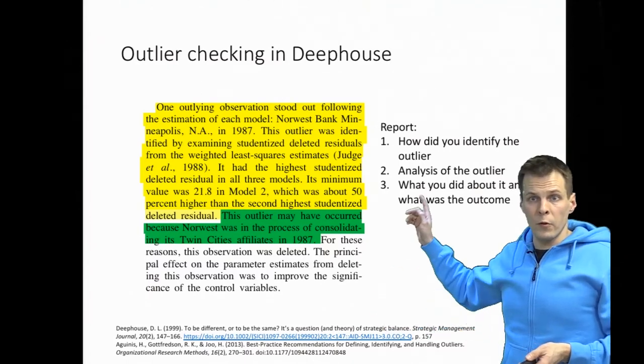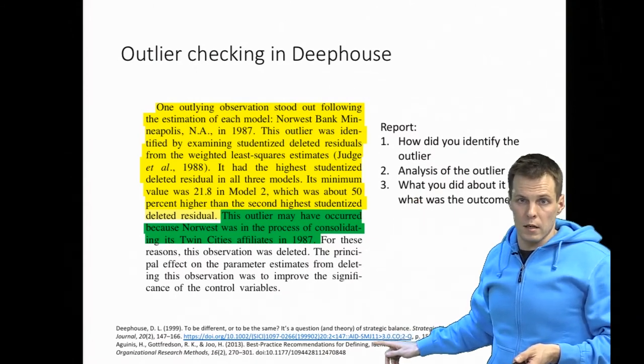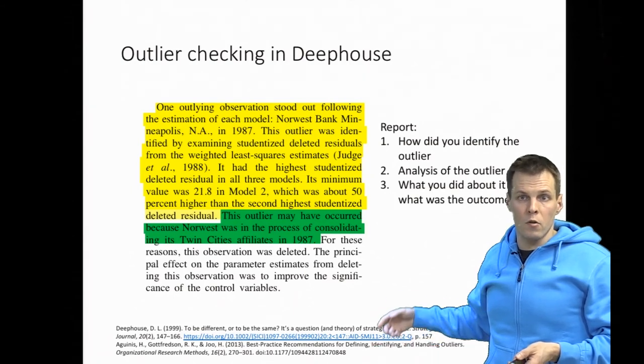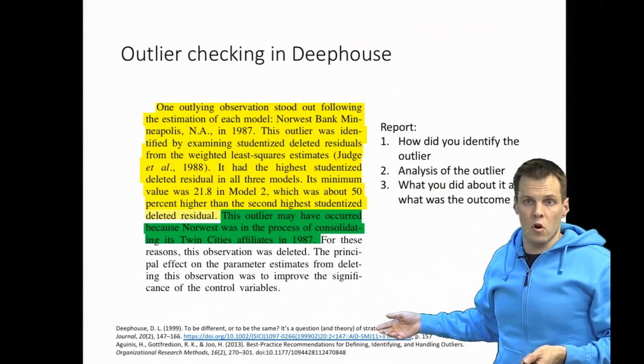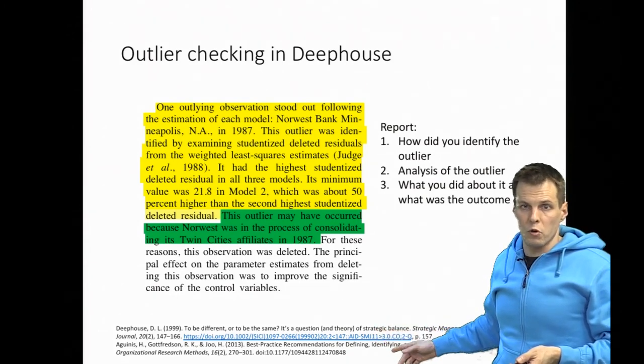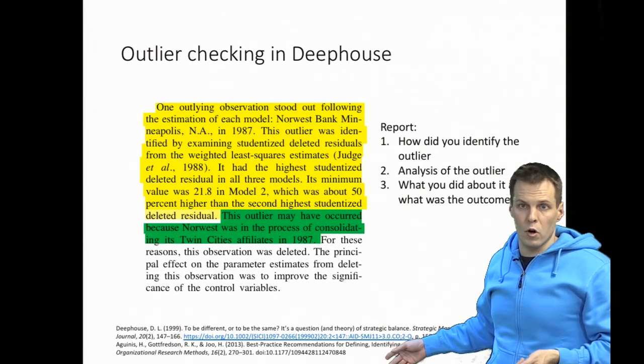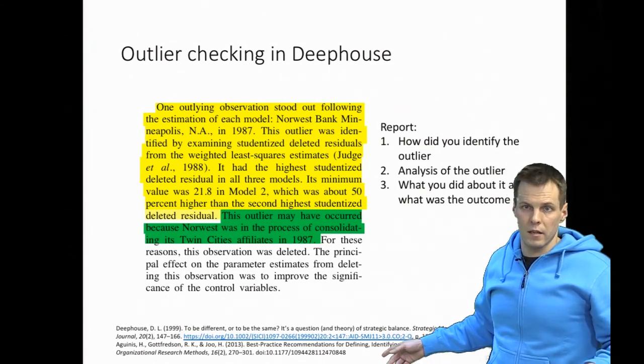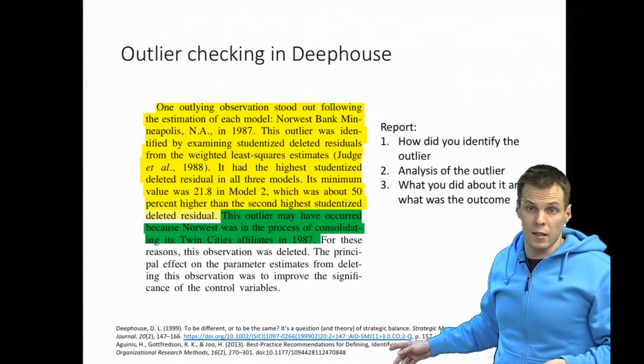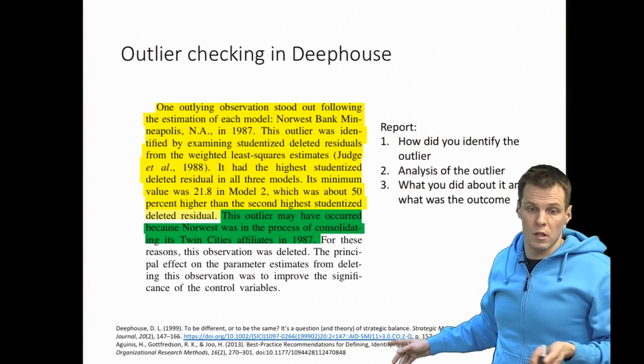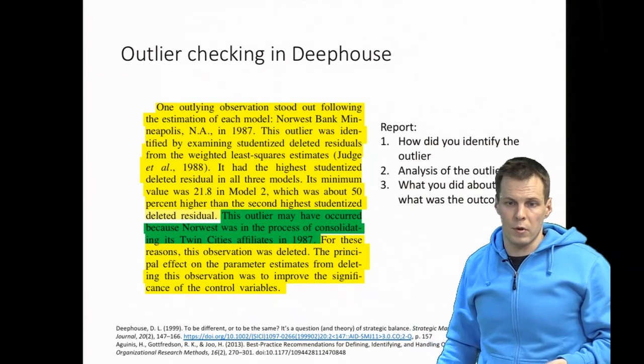If you want to read more about outliers and good practices, I recommend this paper by Aguinis and his students. They write how you identify outliers in regression analysis, structural equation models, and multi-level models, and how you can deal with the outliers. Sometimes outliers are problematic, sometimes there are data entry mistakes which can be fixed, sometimes outliers are truly interesting cases that you should study separately. That's what the Deep House paper did.